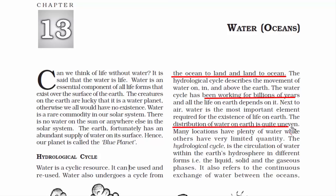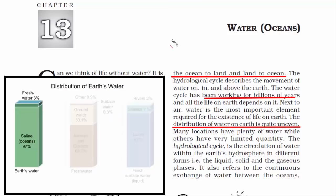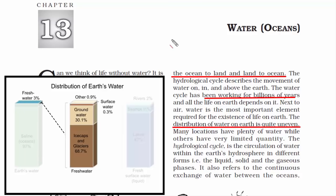The distribution of water on Earth is quite uneven. Only 3% of water is fresh, and the remaining 97% is ocean water, which is extremely salty and not fit for human consumption. Of that 3% fresh water, 69% is found in glaciers, 30% is underground fresh water extracted with bore wells, and the remaining less than 1% is located in lakes, rivers, and swamps.